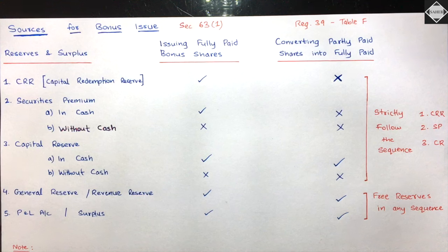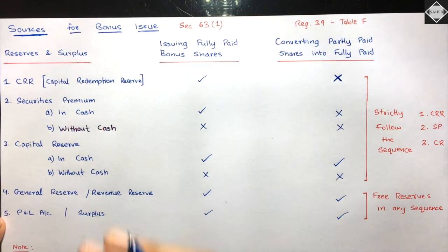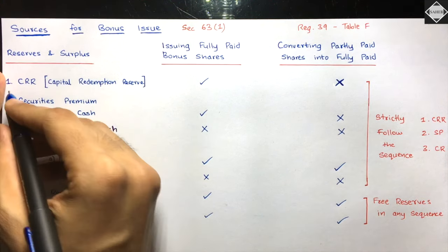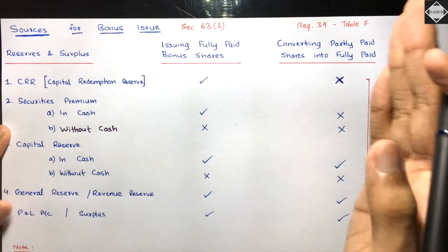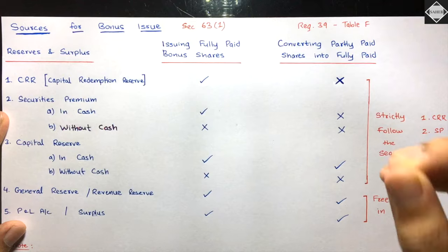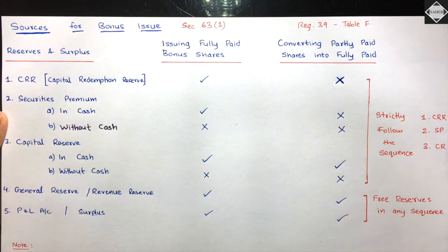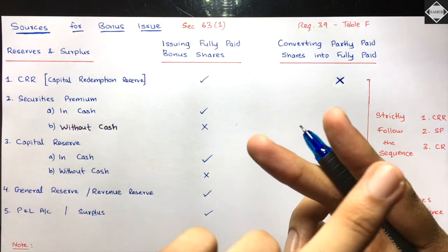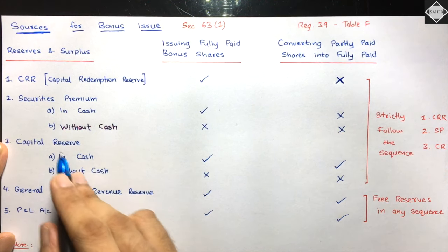The same restriction applies to Capital Reserve: it must also be realized in cash. For free reserves (general reserve, P&L, dividend equalization fund), there is no specific internal sequence - you can use them in any order. So the overall sequence is: CRR → Securities Premium (cash only) → Capital Reserve (cash only) → Free Reserves (any sequence).